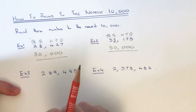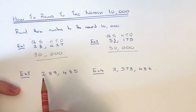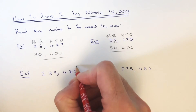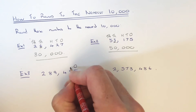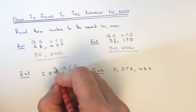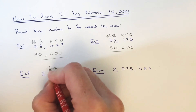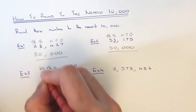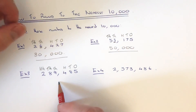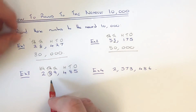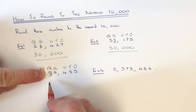Let's move on to example three — getting harder now. This time we've got round 289,485 to the nearest ten thousand. Again, let's look for that tens of thousands column: there's our ones, tens, hundreds, thousands, tens of thousands, and we've also got a hundreds of thousands column as well. This tens of thousands column is the one we need; we can ignore the hundreds of thousands column for the time being.